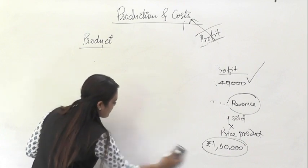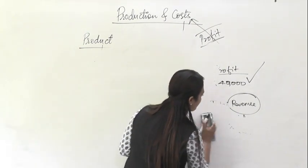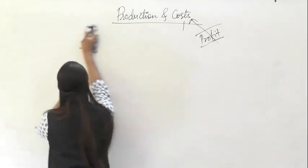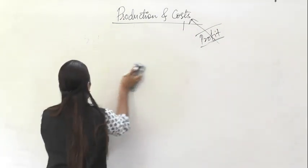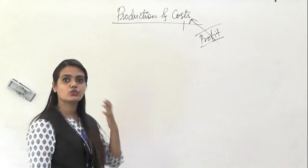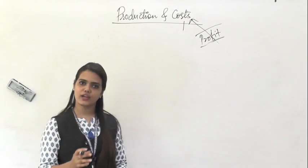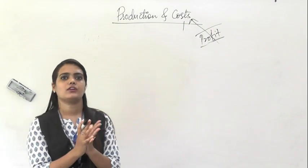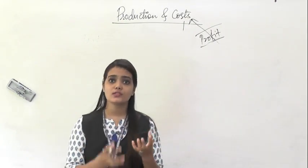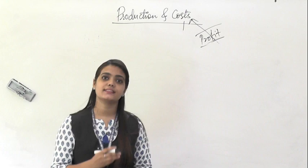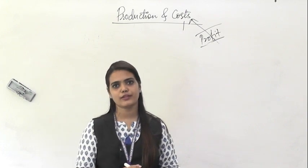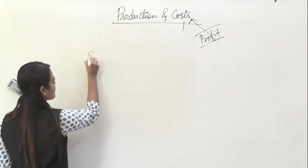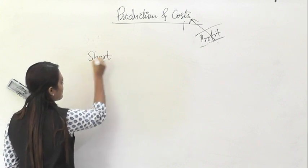The iso-quant is also convex to the origin because if you want to utilize more of one factor, you will have to decrease or sacrifice the use of the other factor. Now let's start with the proper chapter, moving forward with understanding two basic concepts.